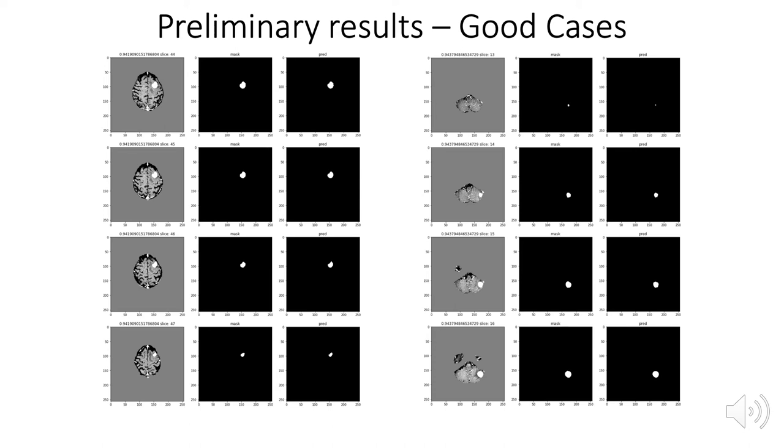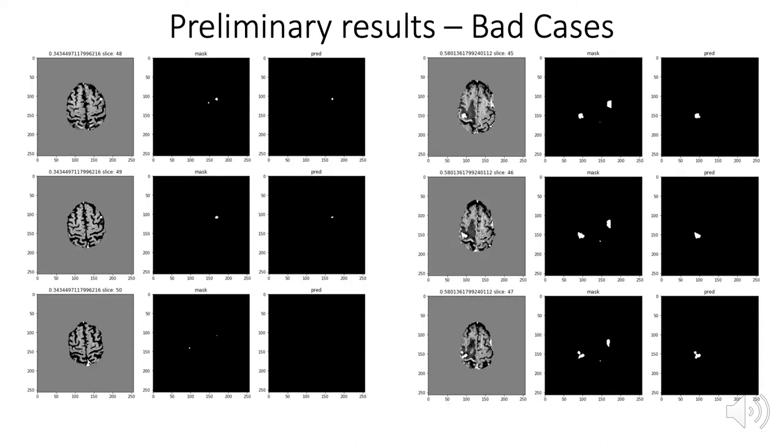But if we could do this in every brain, then we wouldn't need to write this paper, so we definitely have some bad cases. On the left, due to the small mass effects, the model is very hard to find those small masses, and the dice score drops to around 34%. On the right, we can also see that the brain masses are not that small, but the shape is very strange and they are mostly distributed on the edge of the brain. This is another factor that influences our accuracy. In these two cases, our model isn't doing a very good job.